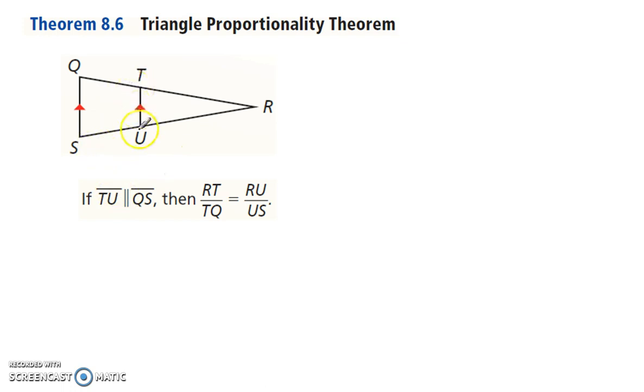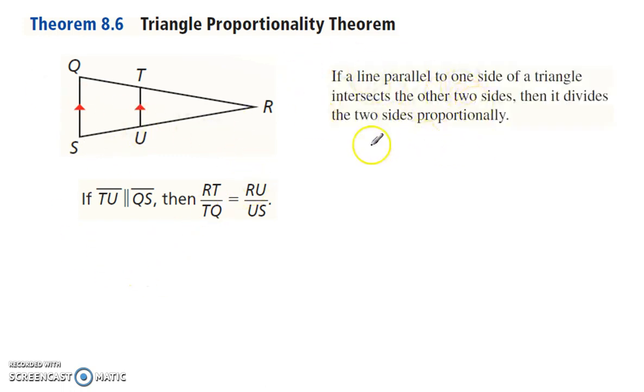So TU, if that's parallel to QS, then RT to TQ is like RU to US, or in words, there you have it, divides these two sides proportionally.